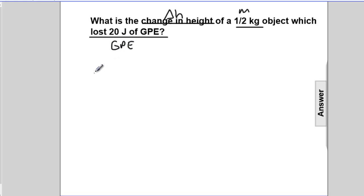We know that the change in GPE is equivalent to mass times gravity times the change in height: ΔGPE = m·g·Δh.